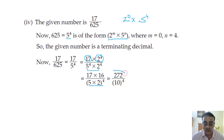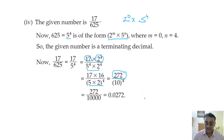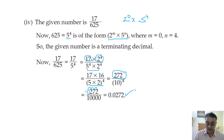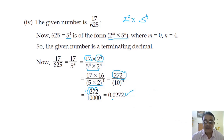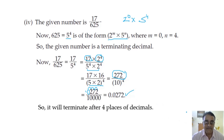Multiplying numerator by 16 gives 272. 10⁴ = 10,000 which has 4 zeros. Counting from the right: 1, 2, 3 — the 4th place has nothing, so we put 0 and place the decimal point. Our final answer is 0.0272. So it terminates after 4 places of decimals.